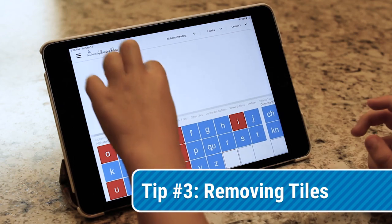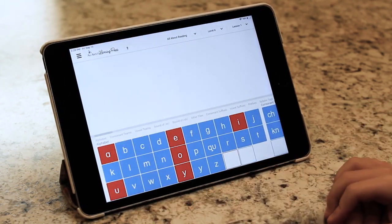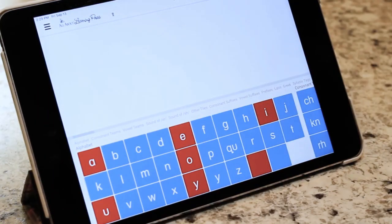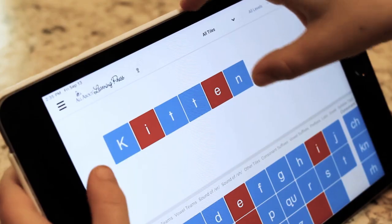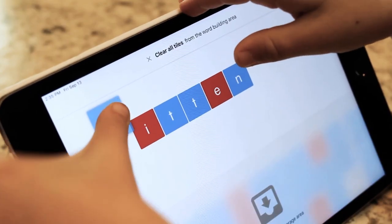Need to remove some tiles? If you want to remove just one tile, drag or swipe the tile down towards the storage area. To remove all the tiles, just drag one tile to the top of the screen.